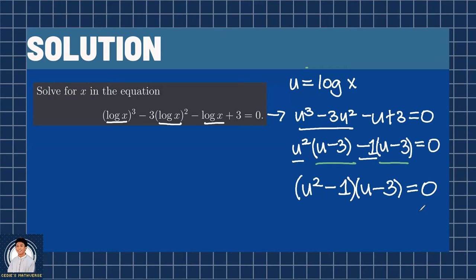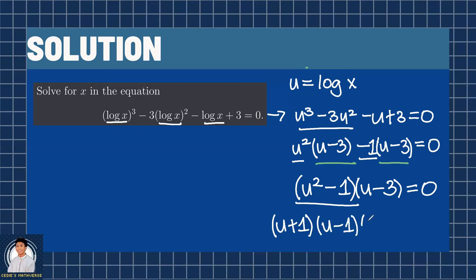And now it is just easy factoring. With u squared minus 1 being the difference of two squares, we have the quantity u plus 1 multiplied by the quantity u minus 1, multiplied by the quantity u minus 3, equals 0.